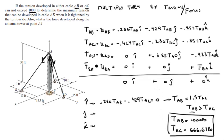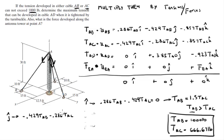From the j-equation: −0.429·T_AB − 0.286·T_AC + 0.385·T_AD = 0. We already have T_AB and T_AC, so we plug them in and solve for T_AD. The tension in AD comes out to be 1609.5 pounds.